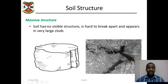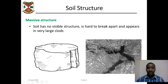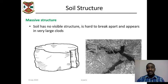The last soil structure type is massive structure. In this type, soil has no visible structure, is hard to break apart, and appears in very large clods. This type of structure is usually found in rice fields.